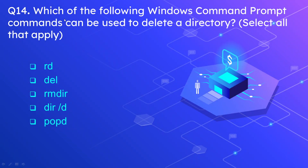Question number fourteen: which of the following Windows command prompt commands can be used to delete a directory? Select all that apply. The options are RD, DEL, RMDIR, DIR /D, or POPD. The correct answers are RD (remove directory) and RMDIR (remove directory) — both commands are used to delete or remove a directory.